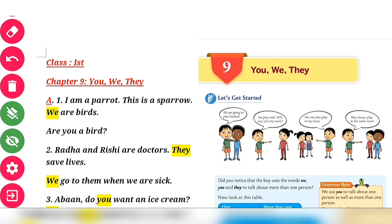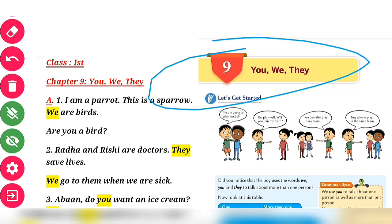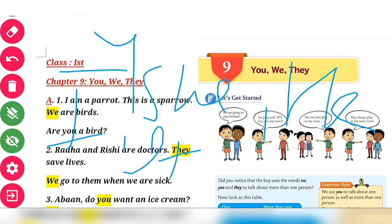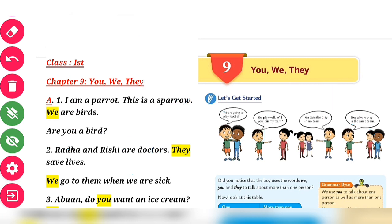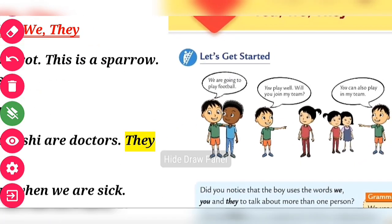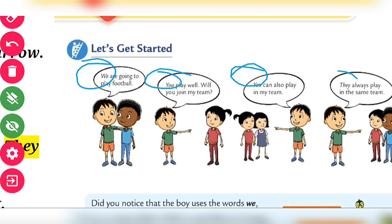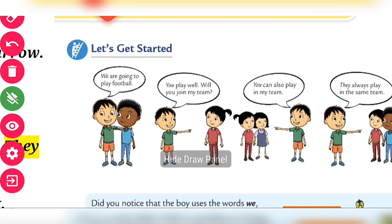In today's class we're going to discuss Chapter Number Nine — 'You, We, and They.' These are also pronouns. In the last class, Chapter Number Eight, we had talked about 'I, he, she,' and related pronouns. So without any delay, let us begin the class. Let's get started.